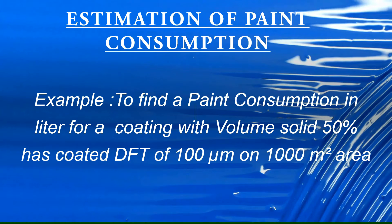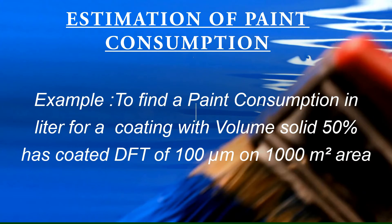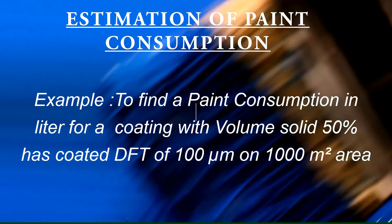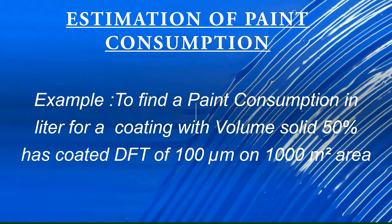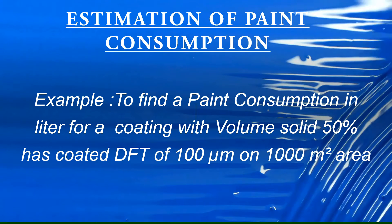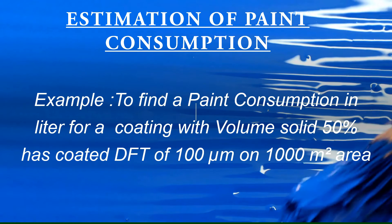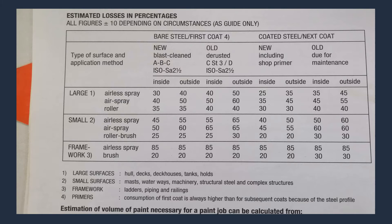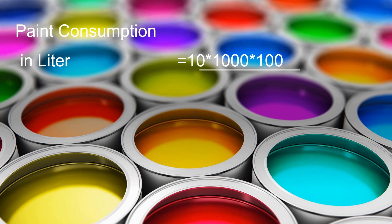For example, find the paint consumption in liters for a coating with a volume of solids of 50%, a DFT of 100 microns, over a 1000 square meter area. A table provides estimated losses as a percentage, with all figures plus or minus depending upon circumstances. Based on our example, paint consumption in liters = 10 × 1000 × 100 ÷ (50 × (100 − 40)).